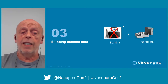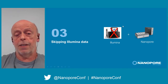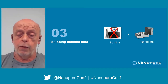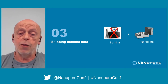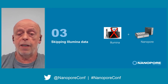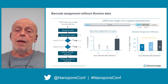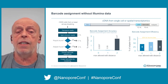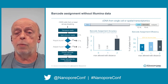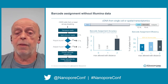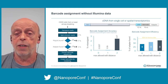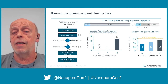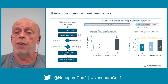Until now, we used both Illumina and nanopore for single-cell and spatial isoform transcriptomics. It would be better to skip the Illumina data completely. Nanopore sequencing has gotten much better during the past two years, and now it's actually easily possible to assign barcodes by clustering, since there are several thousand reads for each cell barcode. We do this now by clustering — others do it also — but the tough part is assigning the UMIs.